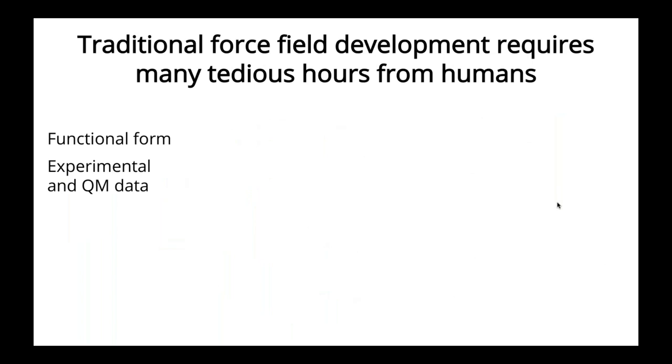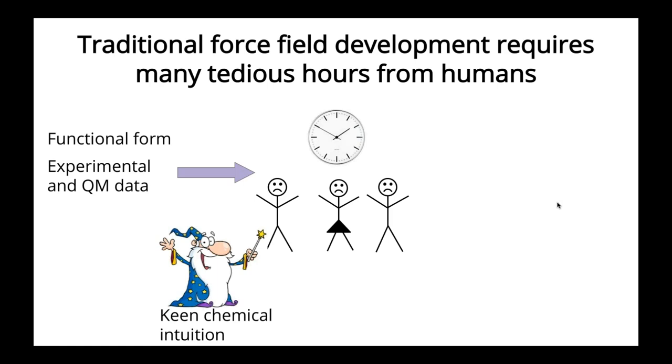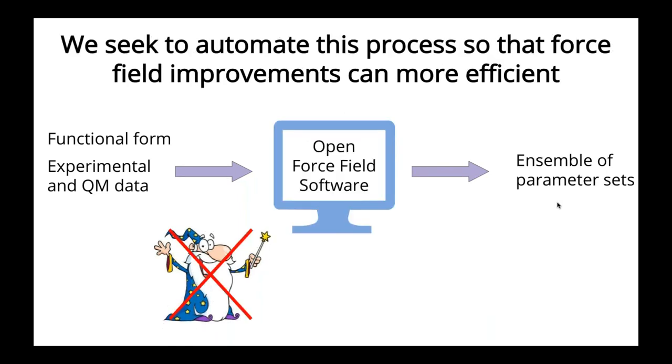Okay, so traditional force fields tend to require a lot of human effort. So we start with a functional form or those potential equations that I showed in the last slide and reference data which can be experimental or quantum mechanical, which is given to what I like to call an army of graduate students and postdocs and requires just a little bit of chemical magic. And after all of that work and human time, we get out a single set of parameters.